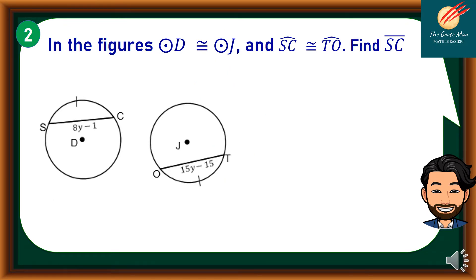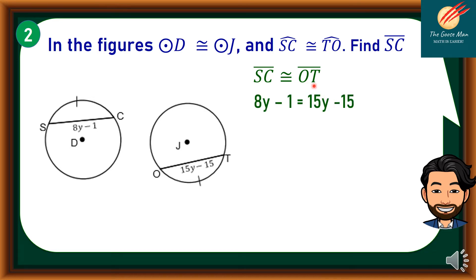Let's consider example number 2. In the figures, Circle D is congruent to Circle J, and Arc SC is congruent to Arc TO. Find chord SC. Let's start from the given that Arc SC is congruent to Arc TO. Based on our theorem, we can substitute that 8Y minus 1 is equal to 15Y minus 15.